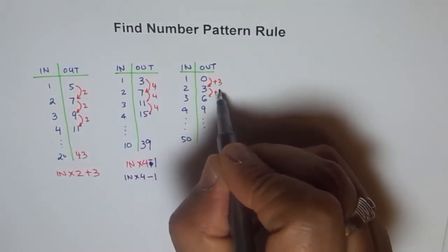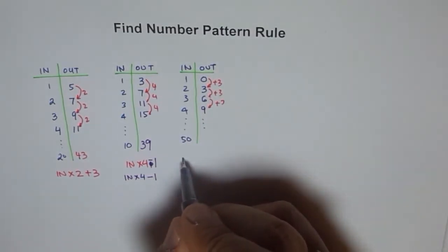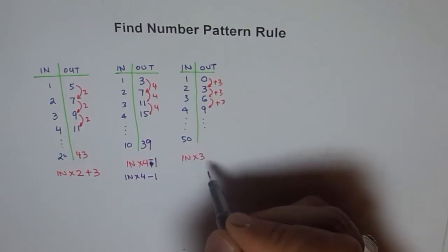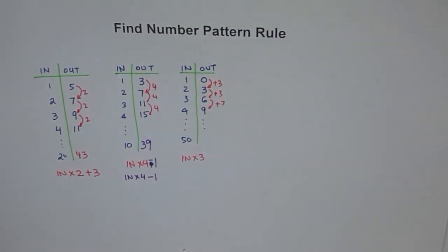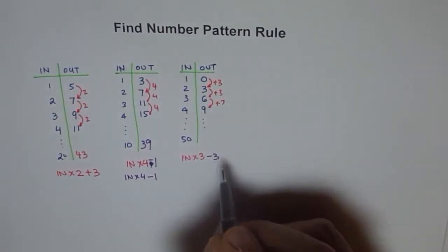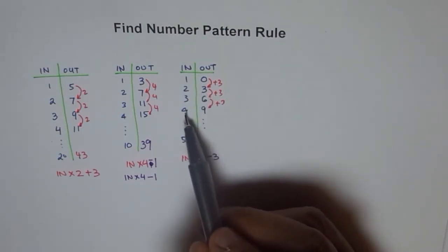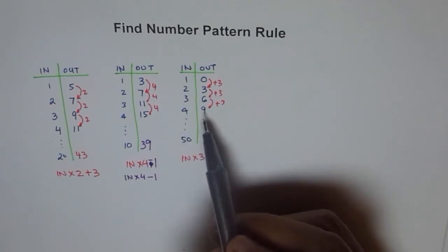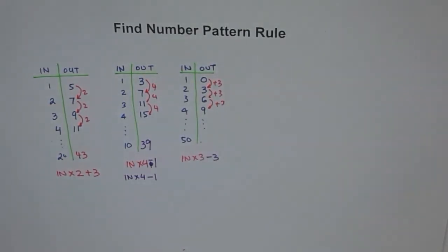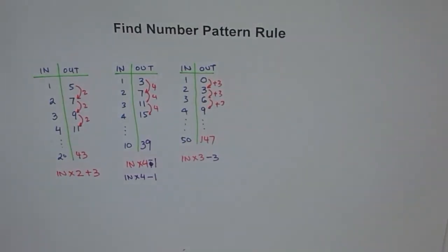How do you get 6 from 3? Plus 3. So input times 3 — let's calculate. 1 times 3 is 3, but we need 0, so minus 3. Let's check: 2 times 3 is 6, minus 3 is 3 — correct! 4 times 3 is 12, minus 3 is 9 — correct! So the rule is input times 3 minus 3. For input 50: 50 times 3 is 150, minus 3 is 147.